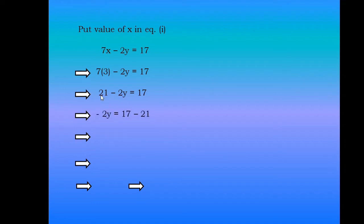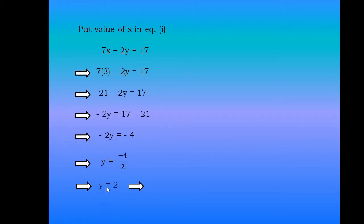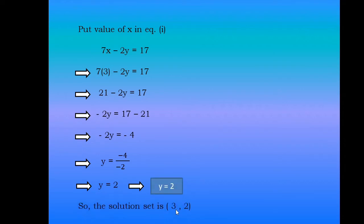21 is positive here, so on the other side of the equality it will be negative, and minus 2y will equal minus 4. To isolate y, we'll divide by minus 2 on the other side of the equality, and we'll have y equals 2. So we have a solution set (3, 2) — the value of x is 3 and the value of y is 2.